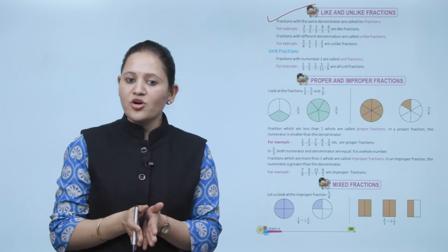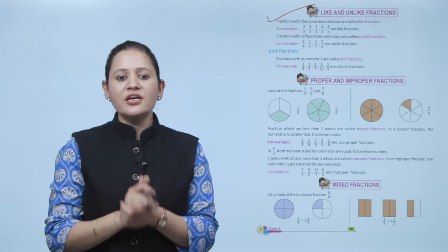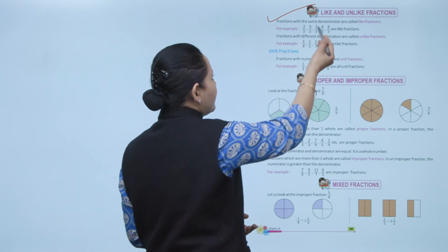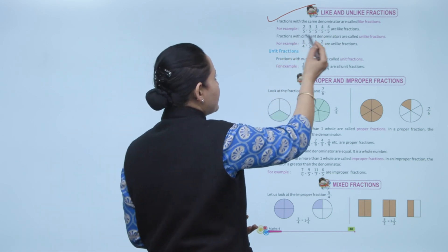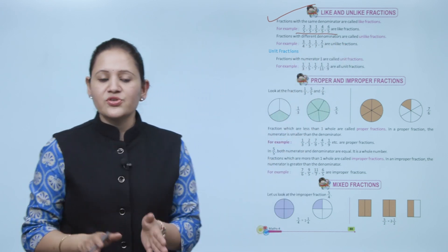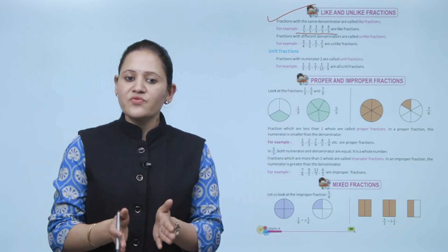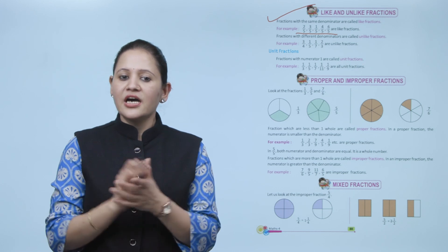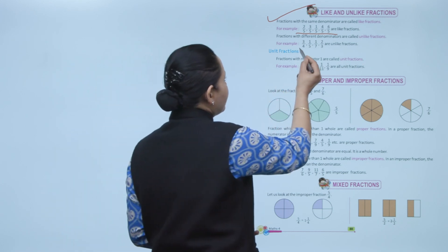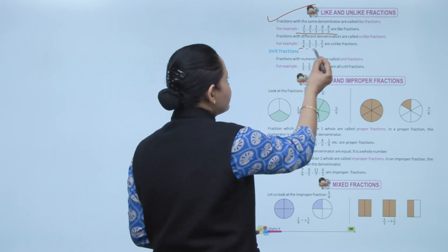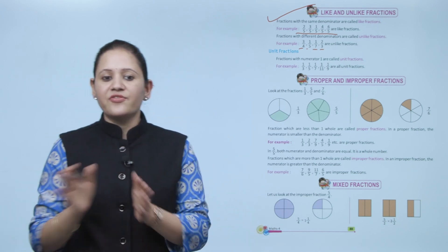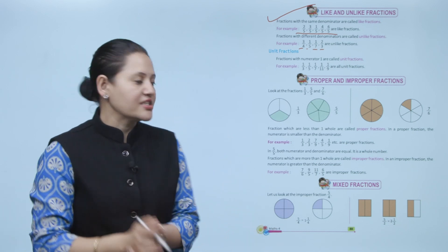Fractions with the same denominator are called like fractions. For example: 2 by 5, 3 by 5, 1 by 5, 4 by 5, 6 by 5 — all have denominator 5, so they are like fractions. Fractions with different denominators are called unlike fractions — for example, fractions with denominators 4, 5, 7, and 3. Next is unit fractions.